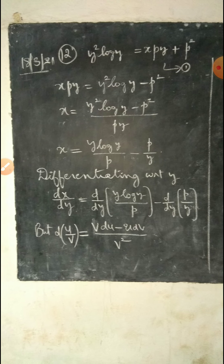Problem number 12: y²·log y = x·p·y + p². From this, x·p·y = y²·log y - p², so X = (y²·log y - p²)/(py), which simplifies to X = (y·log y)/p - p/y. Now differentiating with respect to y, we get dX/dY = d/dy of (y·log y)/p minus d/dy of p/y.